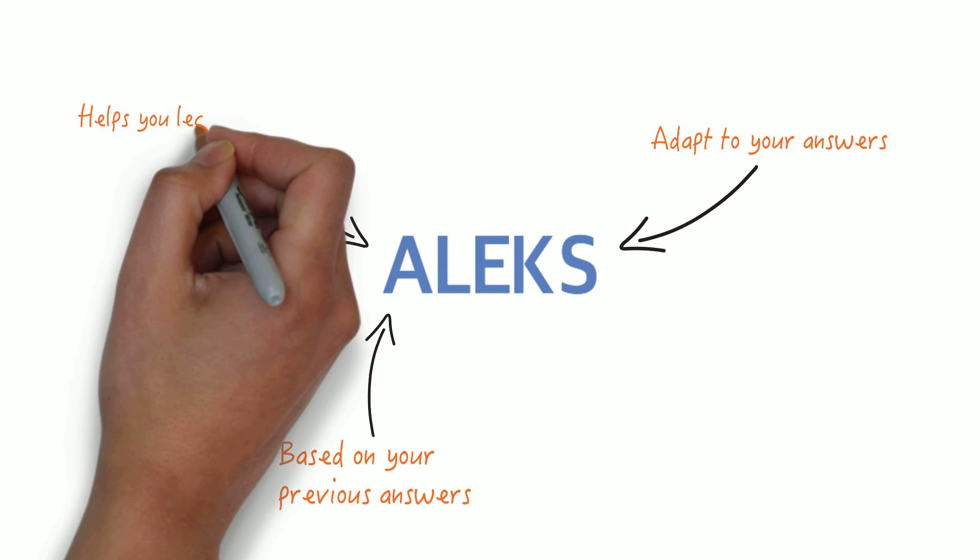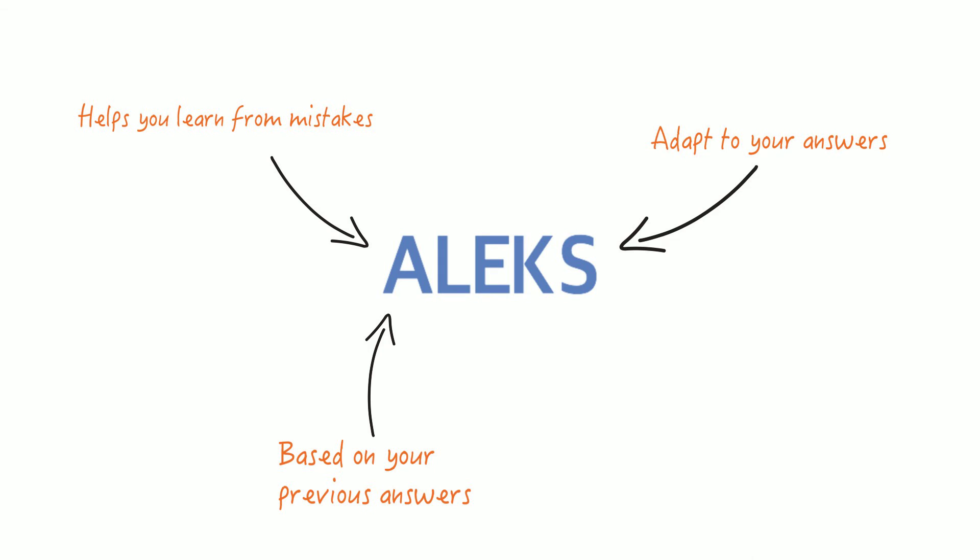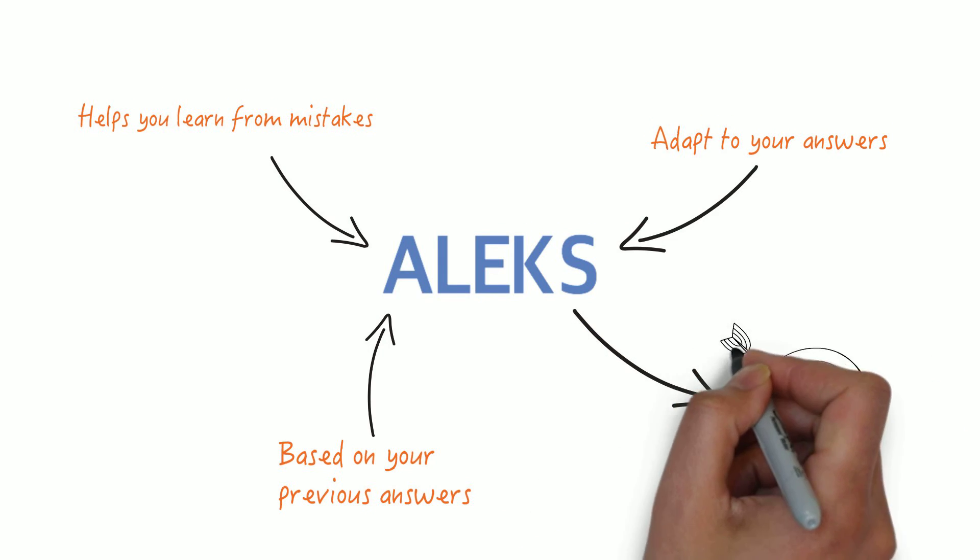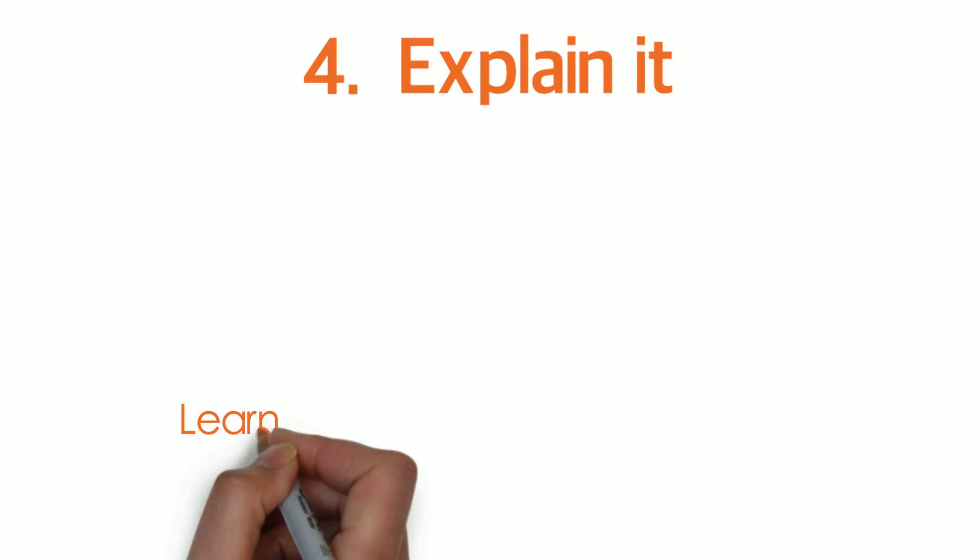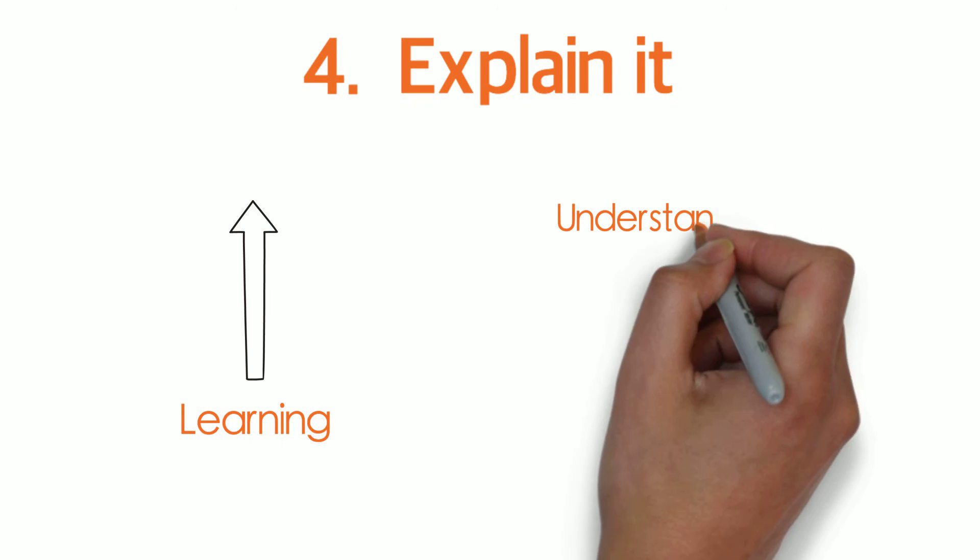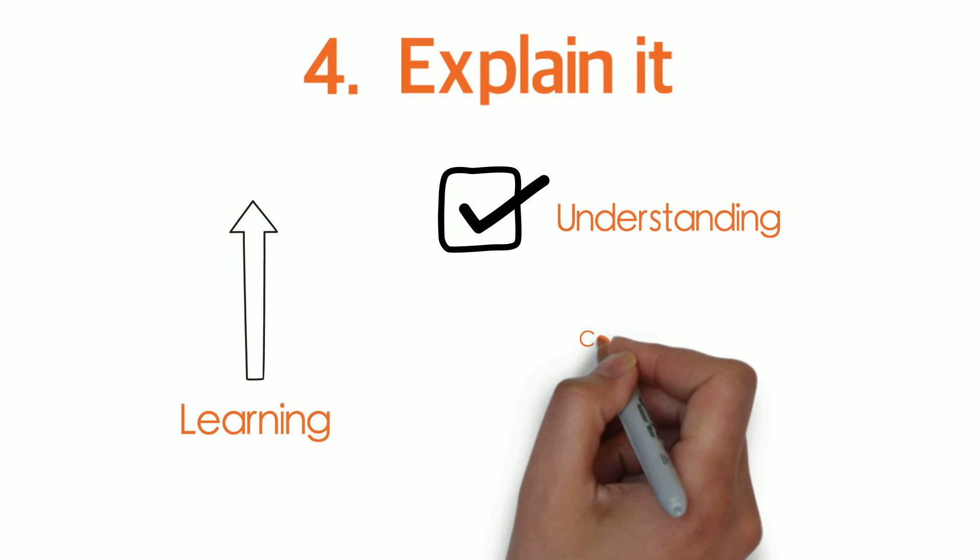You may learn even more from making a mistake than from answering correctly, and each answer, whether right or wrong, will get you closer to mastery. Once you've determined an answer, explain it. In learning by doing, you elevate your learning when you can explain why something works or doesn't work. So don't just answer the question, call it good, and move on. Do check your understanding by talking through your process.